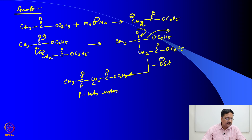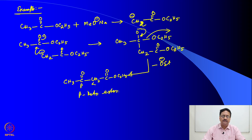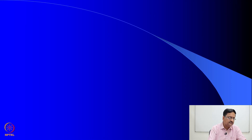The same or similar reaction can be done in a crossed manner. That means you can choose two different carbonyl compounds, and we can choose the carbonyl compound which does not have an alpha hydrogen atom, just like the previous case of aldol condensation.